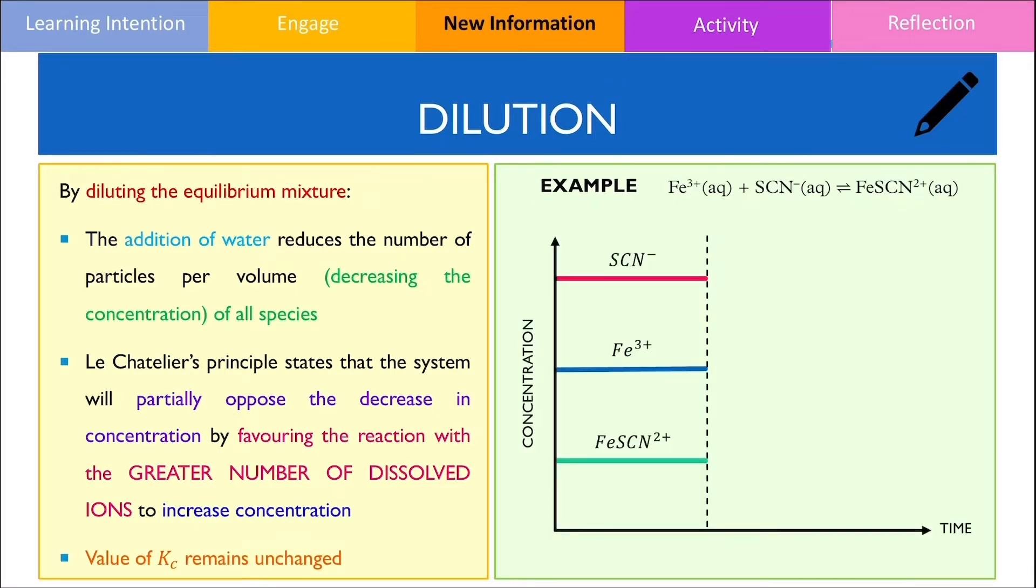In the forwards reaction, Fe3+ ions, or the ferric ion, reacts with thiocyanate or SCN- to produce the iron 3 thiocyanate complex ion.